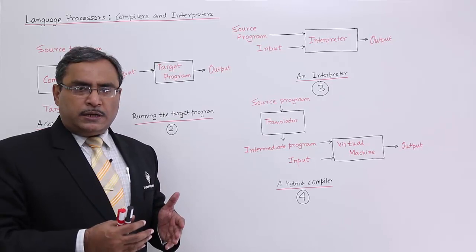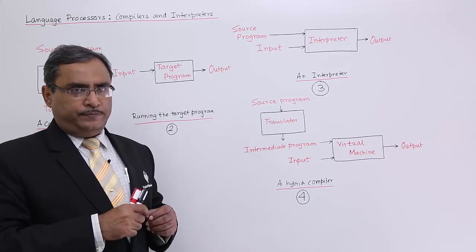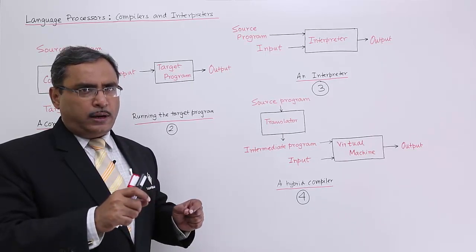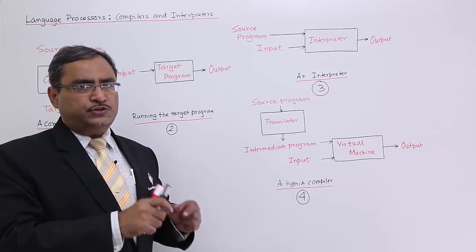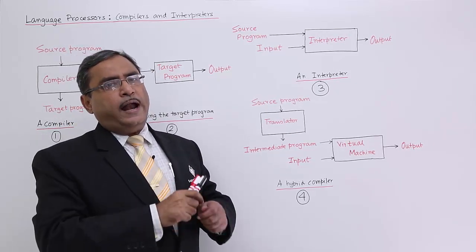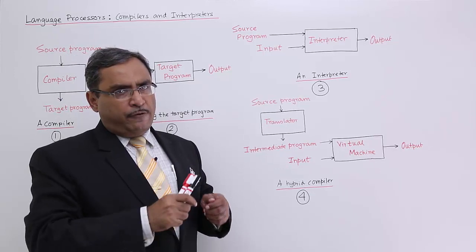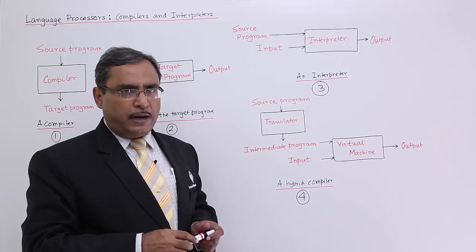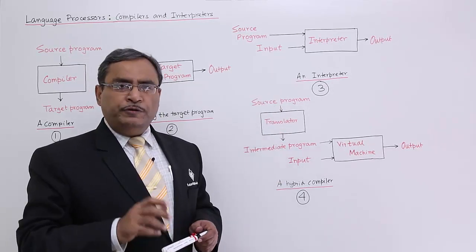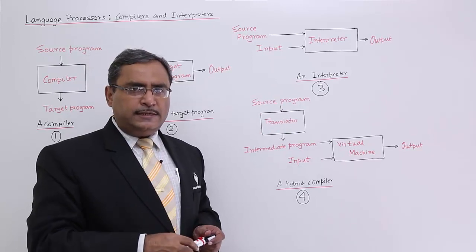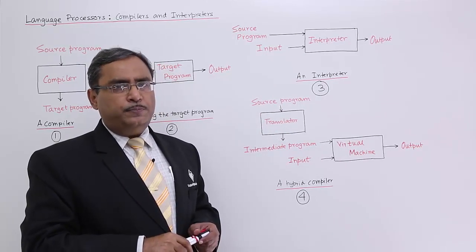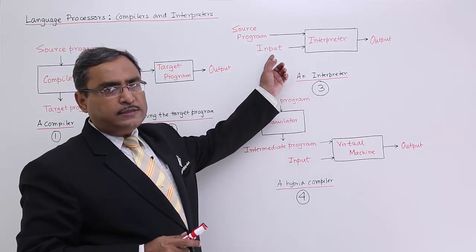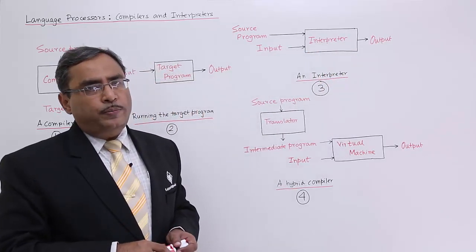An interpreter executes a program line by line. The interpreter will translate each and every statement of the program — the source program written in some source language — and produce the output in the target language, from where the program gets executed. Line-by-line translation prior to execution is done by the interpreter. When a particular statement is getting executed, if it requires input from the input devices of the system, it will take those inputs and process them to obtain the required output.